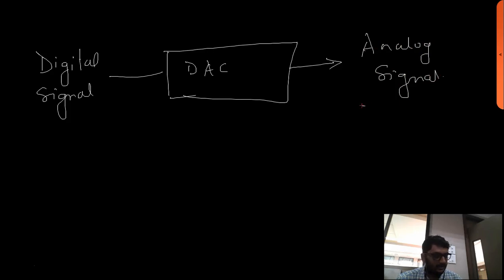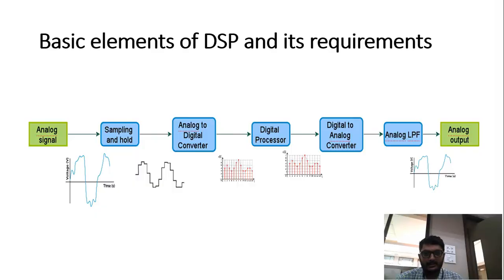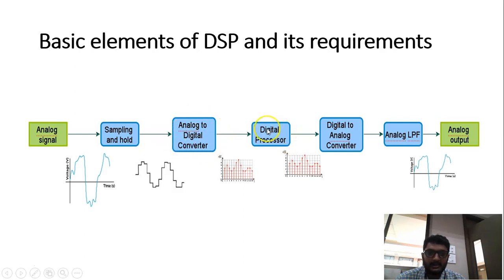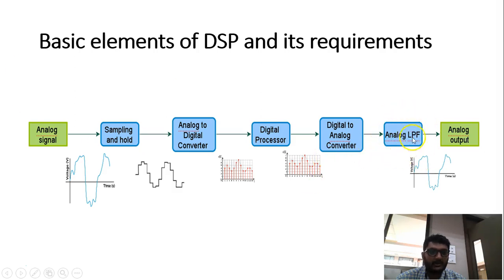So this is the end of our processing. We give the analog signal, we sample and hold it, and this is the analog-to-digital converter, which can be called a coder. Depending upon the quantization level, the coding is done, and it will be given to the digital processor. After that, a digital-to-analog converter is used, followed by an analog low-pass filter, and we will get the analog output. Now we have seen all this block diagram except why we are using the analog low-pass filter.